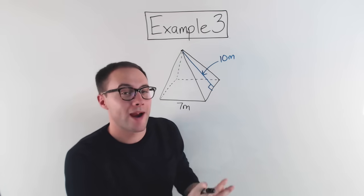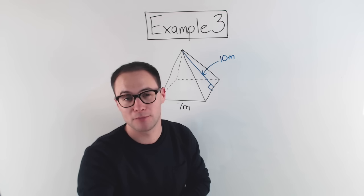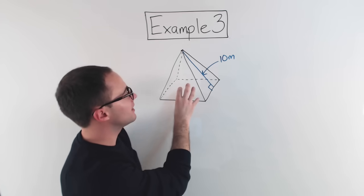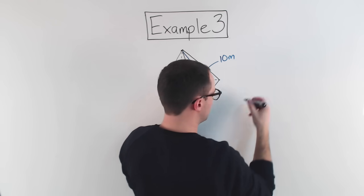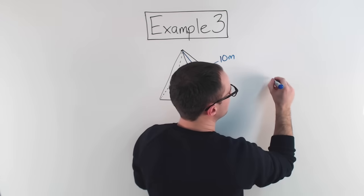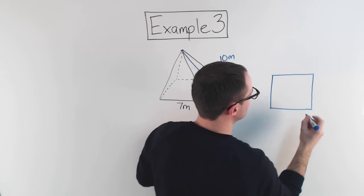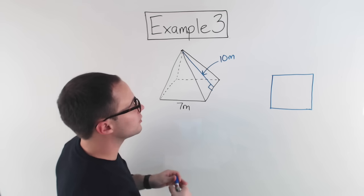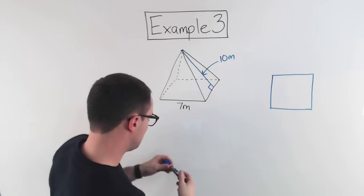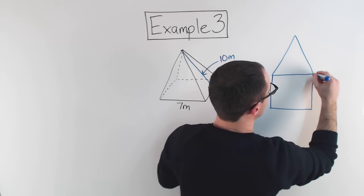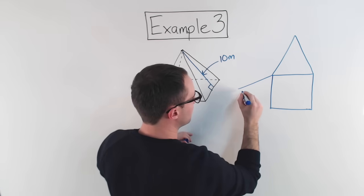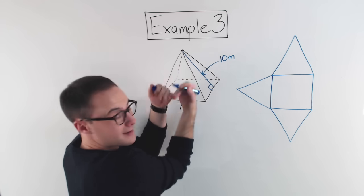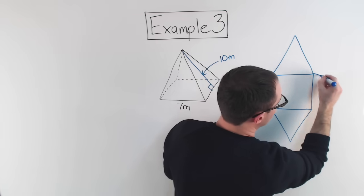Example 3: we have a square pyramid. We've done a couple prisms; now let's move on to pyramids. Let's make a net. It's a square pyramid, so my base is a square. All the sides of a pyramid are going to be triangles, and because it's a square they're all going to be congruent. So I'll have a triangle on the back, one on this side, one down here, one on the front, and one on the other side when folded.